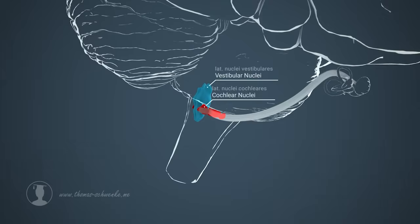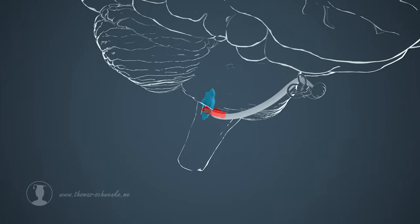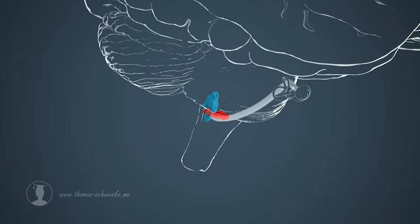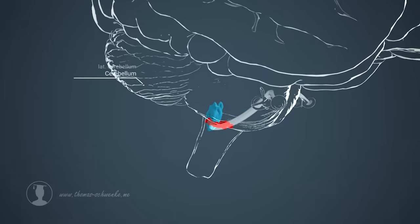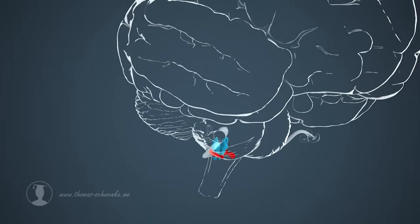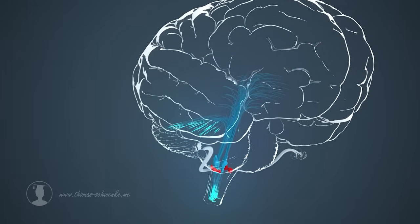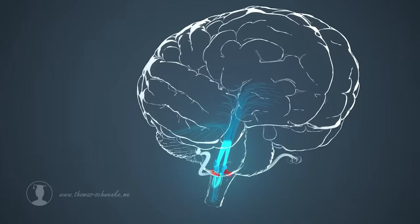The vestibular nuclei process the incoming electrical signals from the three semicircular canals as well as from utricle and saccule. In addition, electrical signals from numerous other sources such as the cerebellum are included in the processing. Finally, numerous brain regions receive the processed signals so that we can effectively maintain balance.